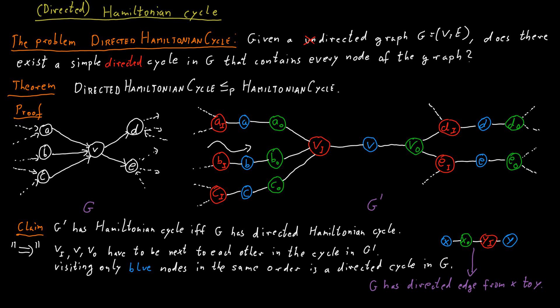Otherwise we would not have connected XO to YI. And so this construction works: if we have a Hamiltonian cycle in this undirected graph, we also had a directed Hamiltonian cycle in the original graph.